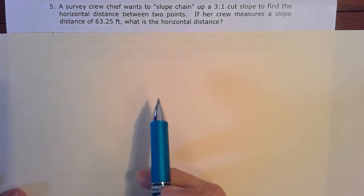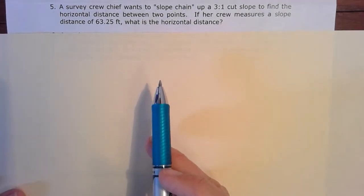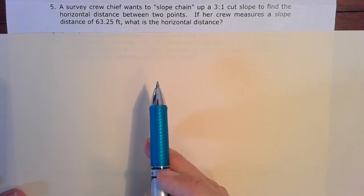So we've got a survey crew chief here who wants to slope chain up a three-to-one cut slope to find the horizontal distance between two points. If a crew measures a slope distance of 63.25 feet, what is the horizontal distance?